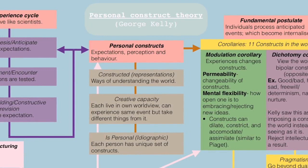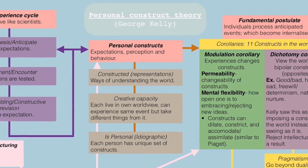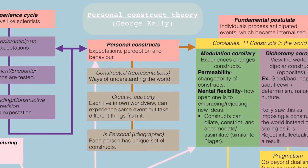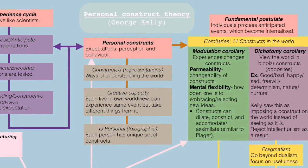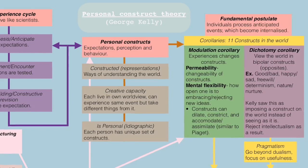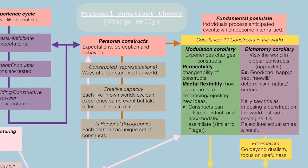In exploring our personal constructs, George Kelly created the fundamental postulate, in which individuals process anticipated events which then become internalized. Kelly organized these into corollaries — 11 constructs that we have of the world. Examples of corollaries include construction, individuality, organization, dichotomy, choice, range, experience, modulation, fragmentation, commonality, and sociality.